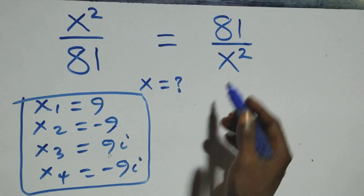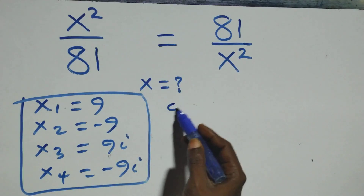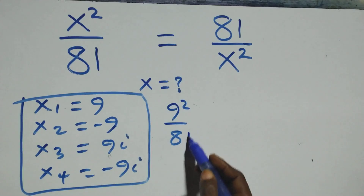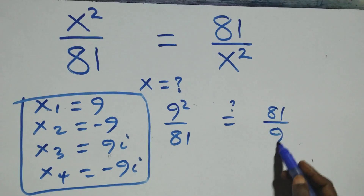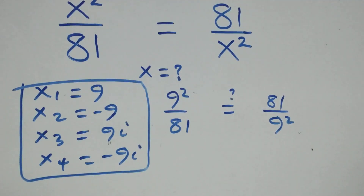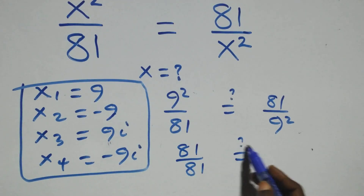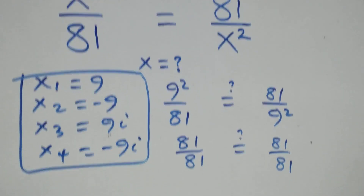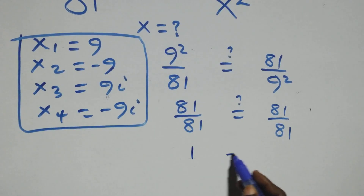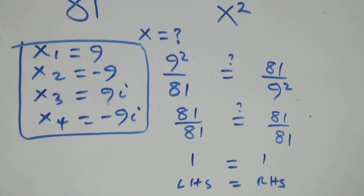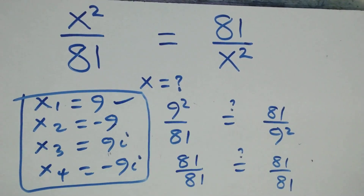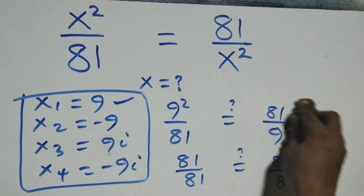For x = 9: the left-hand side becomes 9² over 81 = 81 over 81 = 1. The right-hand side is 81 over 9² = 81 over 81 = 1. Left-hand side equals right-hand side, so x = 9 satisfies the given problem.